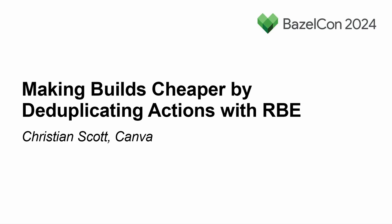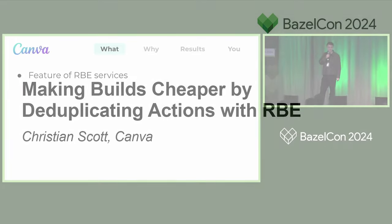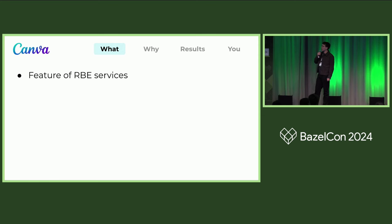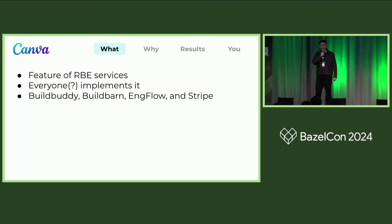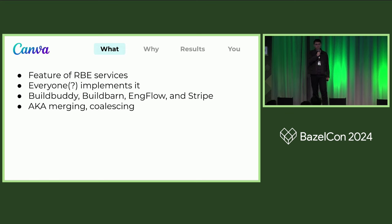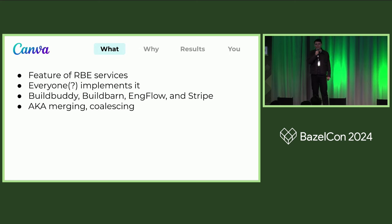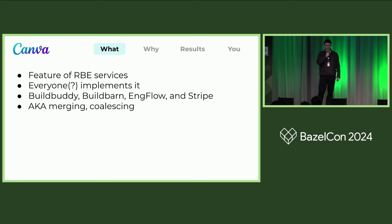This is a feature of RBE services. Everyone that I'm aware of implements this feature — that includes BuildBuddy, BuildBarn, and IngeFlow. IngeFlow is what we use at Canva, and Stripe is mentioned in some blog posts as implementing this feature too. Not everyone calls it deduplication; it's also called merging or coalescing. Merging is way easier to say than deduplication.